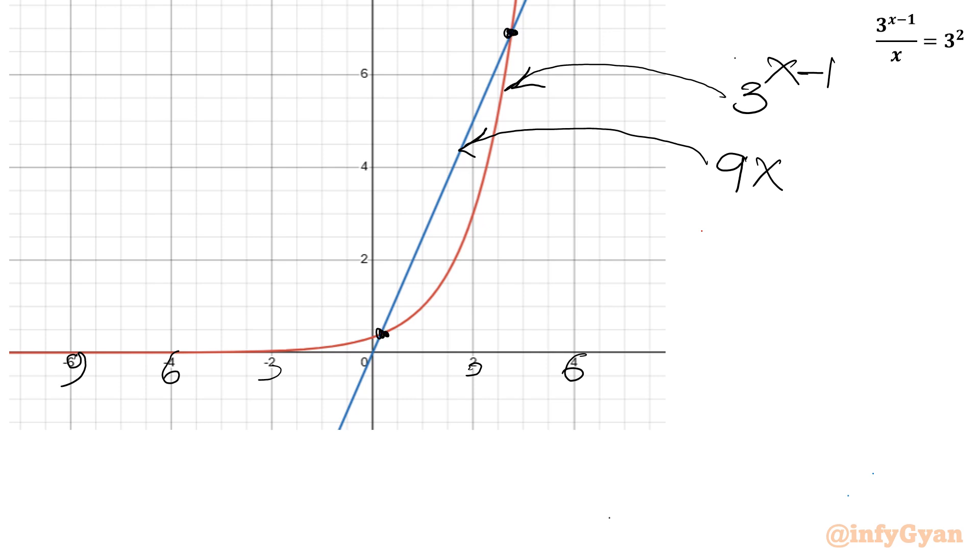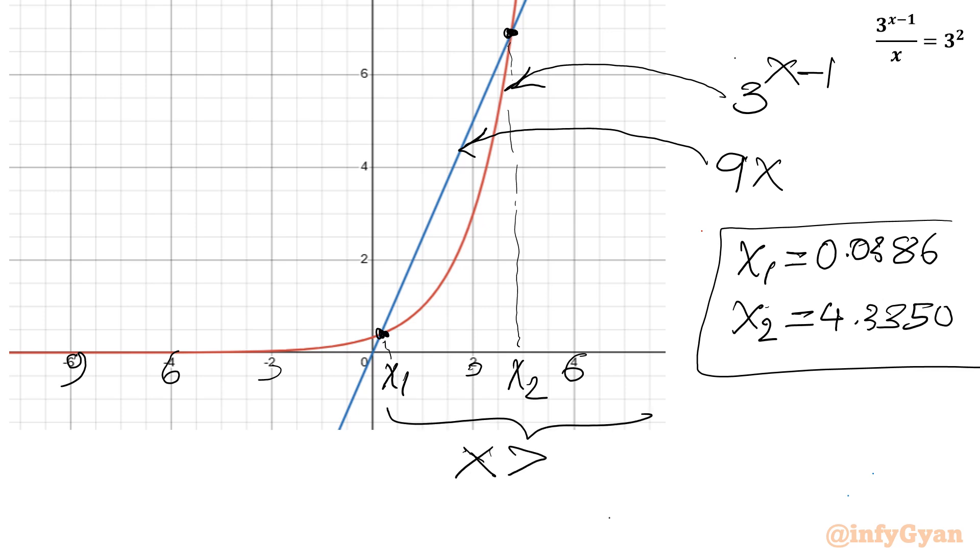One is here and this one is x1, and this second point is suppose x2. So intersection x1 is 0.0386 and intersection x2 is 4.3350. And both values are in the interval of zero to infinity, x positive.